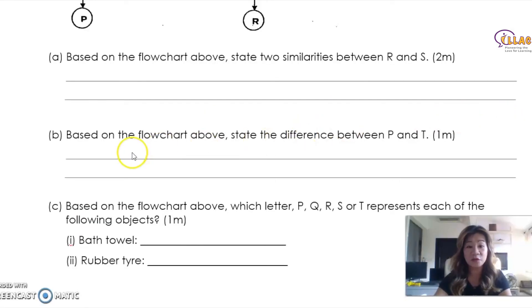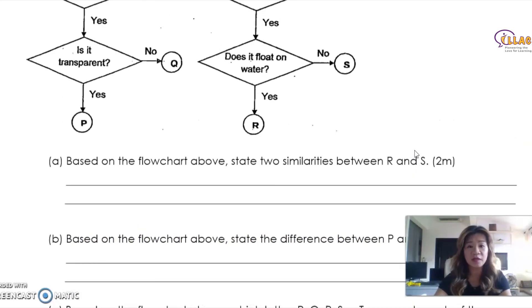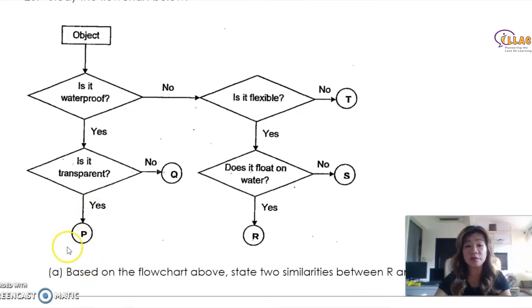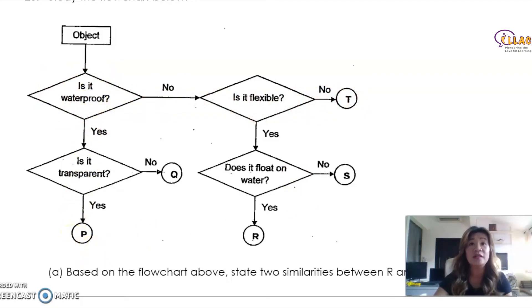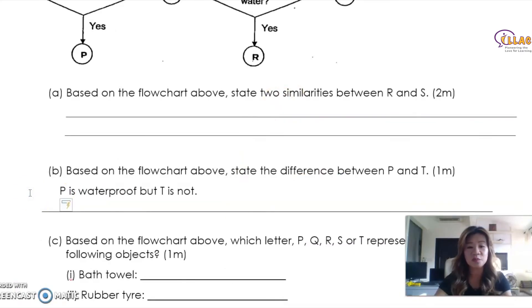Now let's look at part B: based on the flow chart above, state the difference between P and T. You don't need to know what P and T are — just use the flow chart. From the very start: is it waterproof? No leads to T, and yes leads to P. So the difference between the two materials is: P is waterproof and T is not.